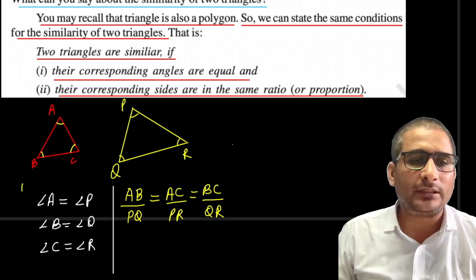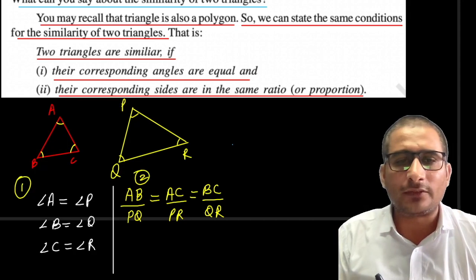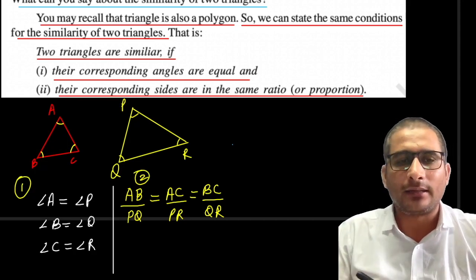If these sides ratios are the same, this is the first condition, this is the second condition. If the two triangles follow these two conditions, then those two triangles are called similar triangles.